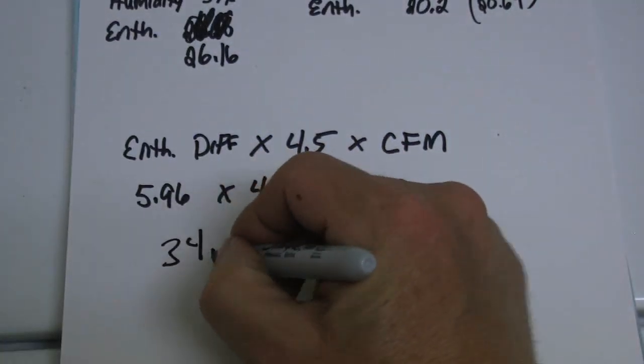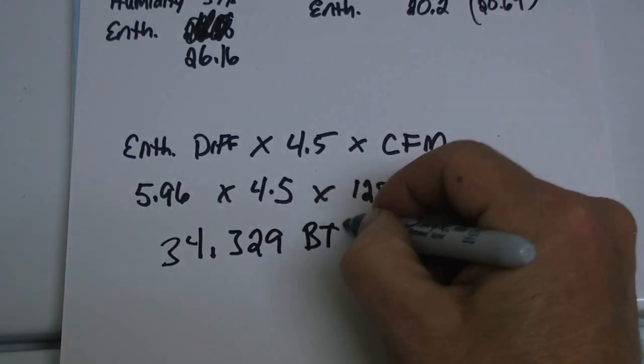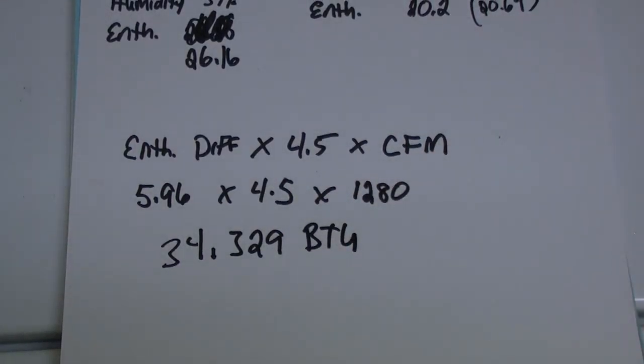34,329 BTUs. Now that is what this system is putting out right now. You want to be as close to what the tonnage is on your air conditioner. In this case it's 36,000 BTUs.